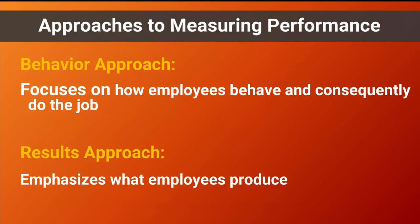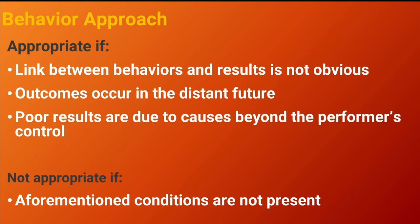The main approaches to measuring performance are the behavior approach and the results approach. The behavior approach focuses on how employees behave and consequently do their jobs. The results approach emphasizes what employees produce. The behavior approach is appropriate when the link between behaviors and results is not obvious, when outcomes happen in the distant future, or when poor results are due to causes beyond the performer's control, such as having outdated technology.